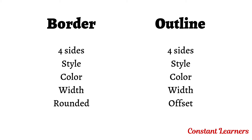We can also define the border color and the outline color of our own choice. Then we have the border width and the outline width — we can define the width of both. The fourth properties for both are different: for the border we have border-radius which gives rounded corners, and for the outline we have outline-offset which provides a gap between the border and the outline.